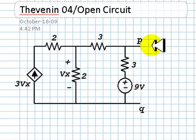We are to find the VOC at the port, the open circuit voltage at the port of interest PQ, where we want to find the Thevenin equivalent of the circuit.